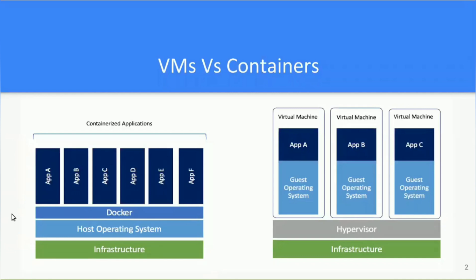A virtual machine is an emulation of a computer system. With the help of a virtual machine, you can run more than one operating system on a single hardware. In this case, hardware resource is virtualized. Each virtual machine requires its own operating system. There is a component called hypervisor which is responsible to create, run and manage virtual machines. It sits between the virtual machine and the hardware.